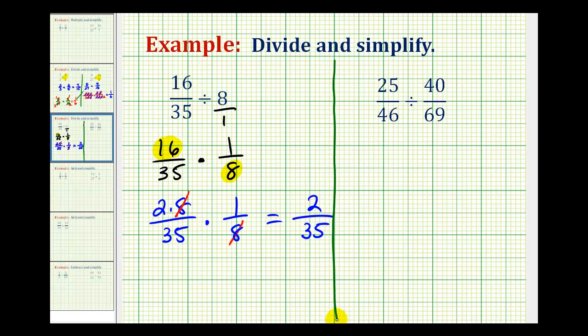Let's take a look at our second example. Let's write this as a multiplication problem. So 25/46 divided by 40/69 is the same as multiplying by 69/40.